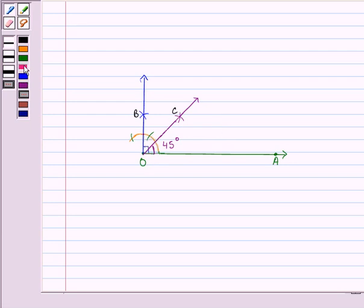We will be drawing OD as the angle bisector of this 45 degrees. So it will be like this. So here we have drawn OD, the angle bisector of this 45 degrees.